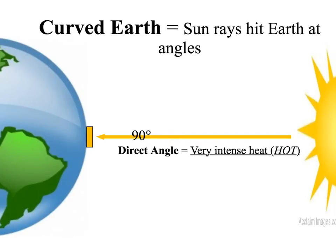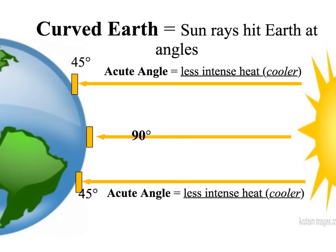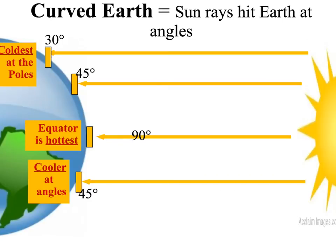A 90-degree or direct angle is going to give us very intense heat, and the part of the Earth that gets this is the equator. Because the Earth is curved, even though the sun is shining directly at the Earth, the equator gets 90 degrees. The farther north you go, the less direct the sunlight — until at the north pole you get very, very low angles of light. So the farther north, the less energy we get, and therefore it's going to be cooler. The equator is the hottest and it's coldest at the poles.